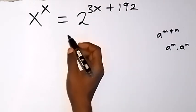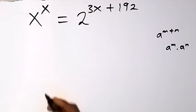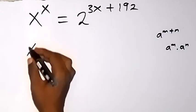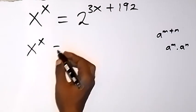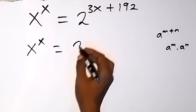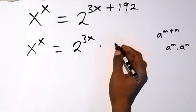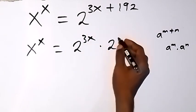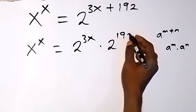Then, when we write what is on the right hand side like that, this will become x raised to power x equals to 2 raised to power 3x multiplied by 2 raised to power 192.